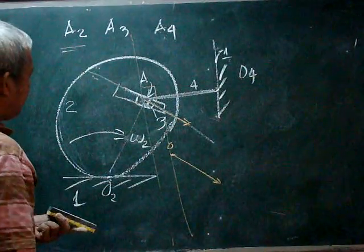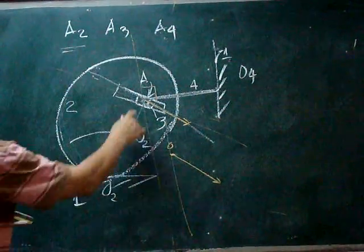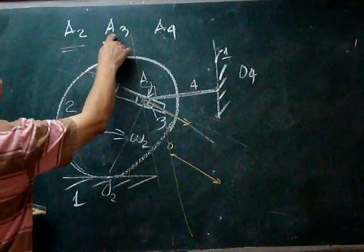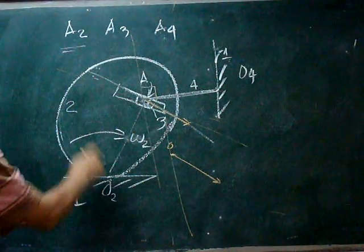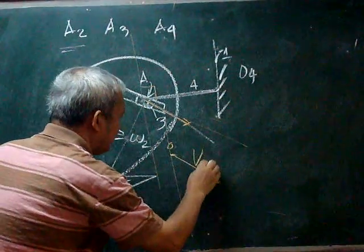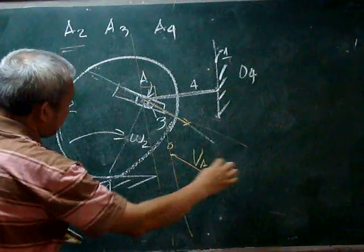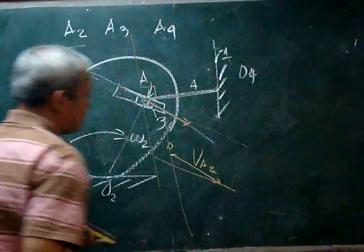Now, there is a certain sliding velocity. And that sliding velocity is the relative velocity of A3 on 2. And so we can draw that at the end of the vector A2. That would be along that direction. And we can draw that here.